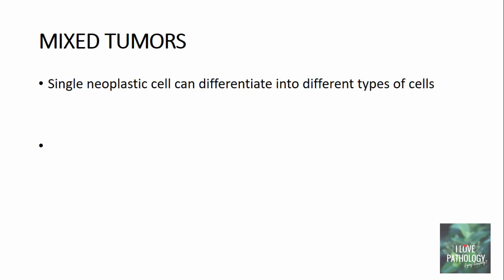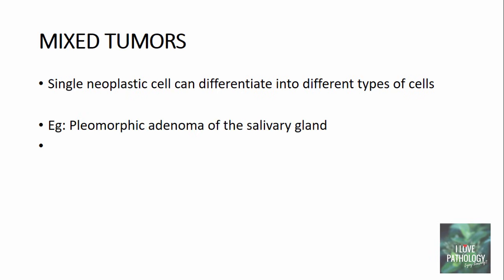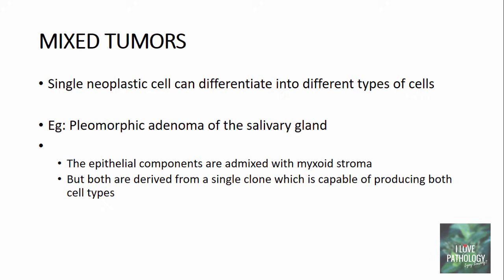We will now move on to understand some different tumors other than benign and malignant. There are tumors referred to as mixed tumors — these are tumors where a single neoplastic cell can differentiate into different types of cells. For example, pleomorphic adenoma of the salivary gland comprises epithelial component as well as a myxoid stroma admixed within it. Importantly, both the epithelial and myxoid stroma are derived from a single clone capable of producing both cell types, and that is why these tumors are referred to as mixed tumors.